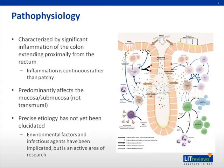Let's review the basic pathophysiology of ulcerative colitis. It is characterized by significant inflammation of the colon extending proximally from the rectum in continuous fashion. The inflammation predominantly affects the mucosa and submucosa and is not transmural in nature, a feature distinguishing it from Crohn's disease. The precise etiology has not been elucidated and is an area of active investigation. Environmental factors and infectious agents have been postulated to be contributory, but the exact mechanisms are unknown.